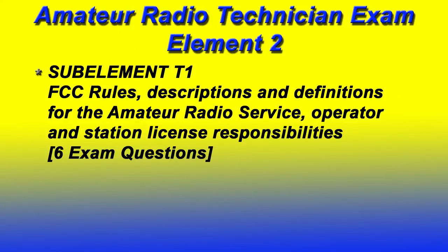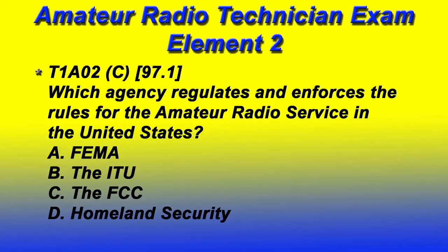Sub-element T1 covers FCC rules, descriptions and definitions of the amateur radio service, and operator and station license responsibilities. There will be six questions on the exam from this area. Notice the bracket reference '97.1,' which reflects the part of the FCC rules and regulations that contains the information relevant to that question.